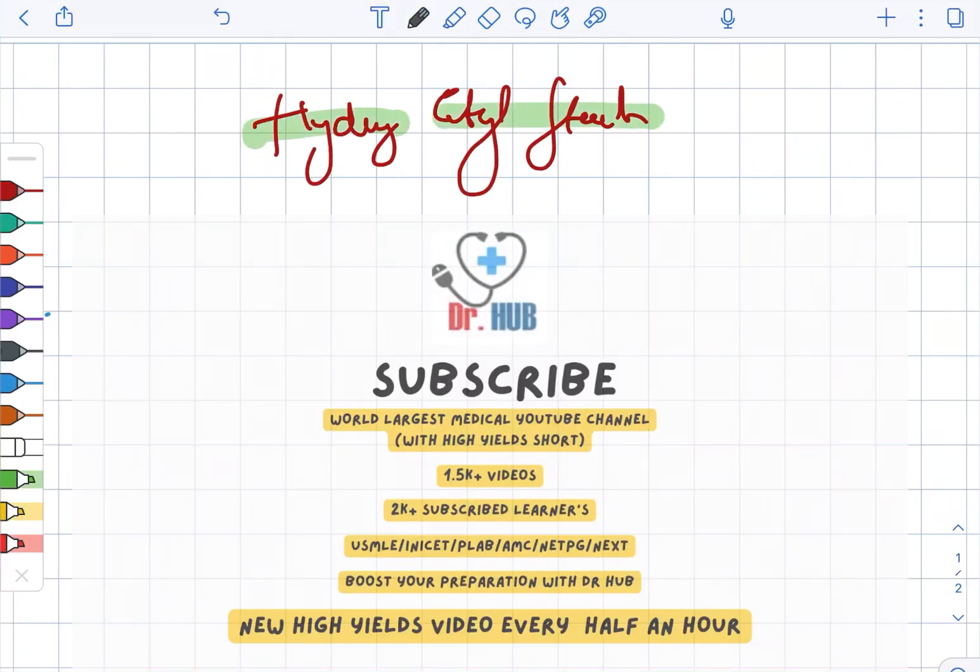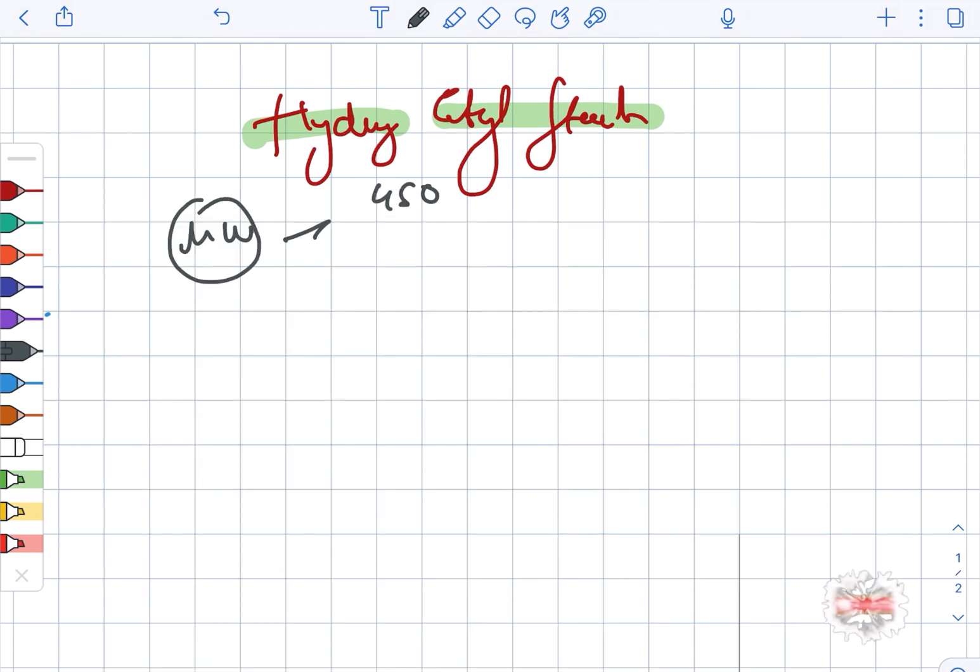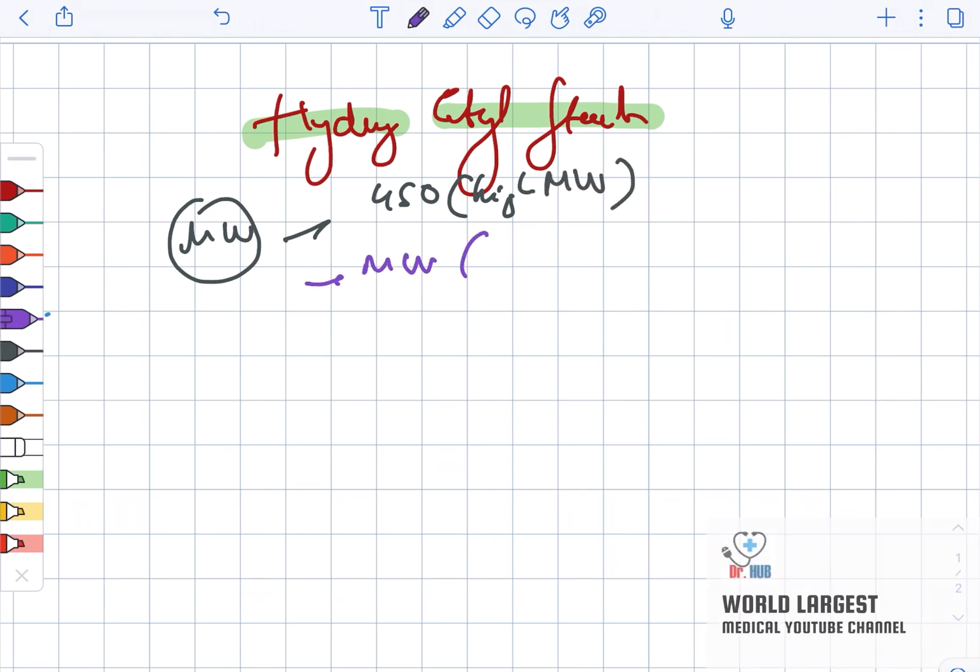Hydroxy ethyl starch - the molecular weight is around 450 in case of the high molecular weight. Next, in case of medium weight, it is about 200.